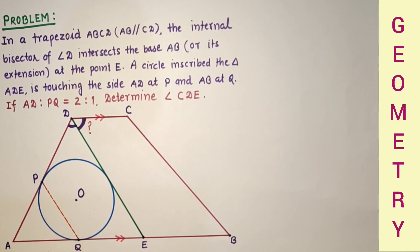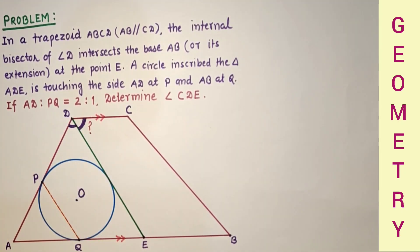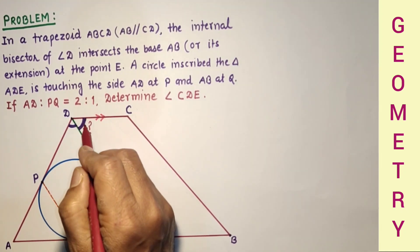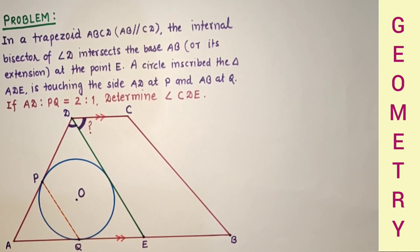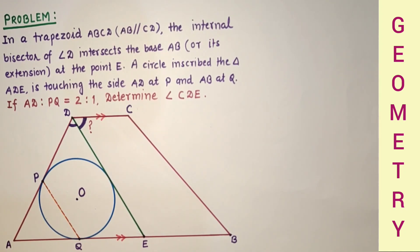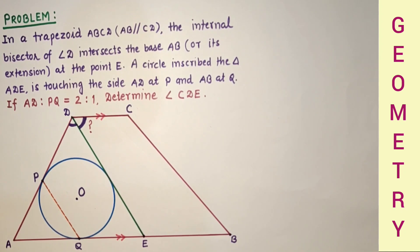And we are given that AD is to PQ as 2 is to 1. We have to find this angle, angle CDE. Here is the question written. We are going to use the concept that from an exterior point, tangents drawn will be equal.